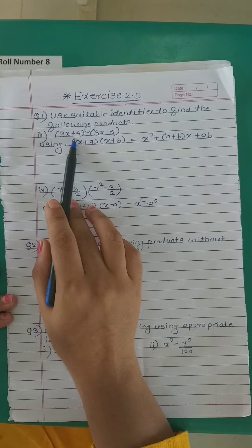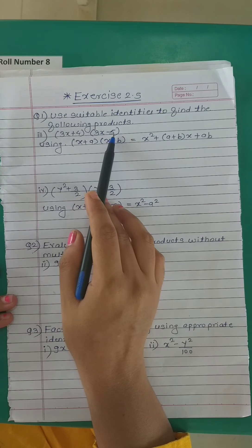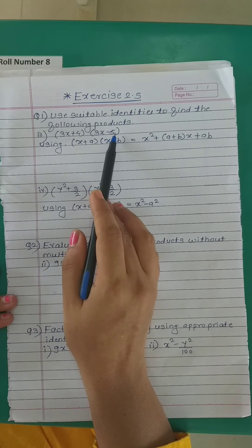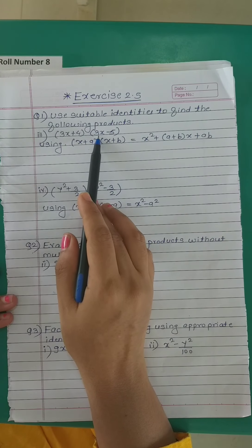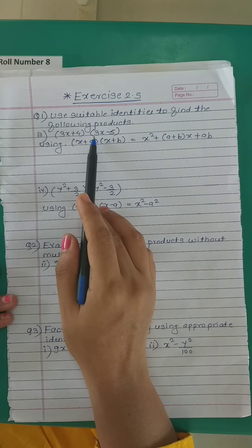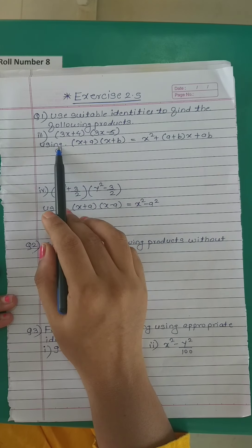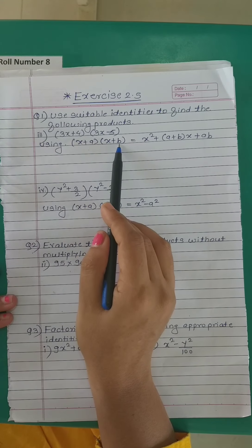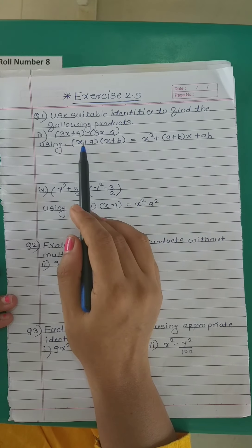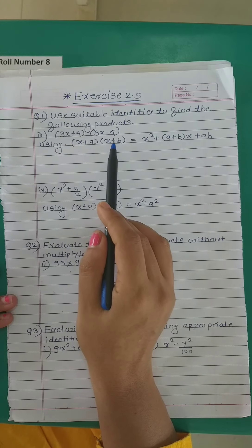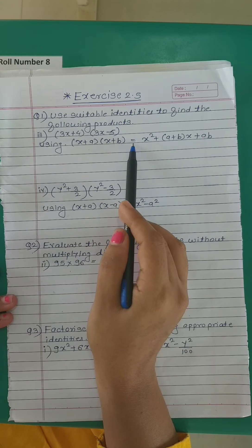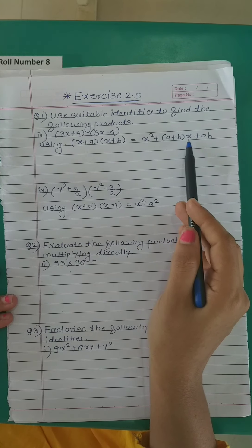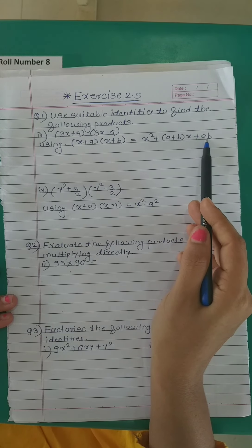The first question is: (3x + 4)(3x − 5). For this, we use the identity (x + a)(x + b) = x² + (a + b)x + ab. Do you remember this identity?